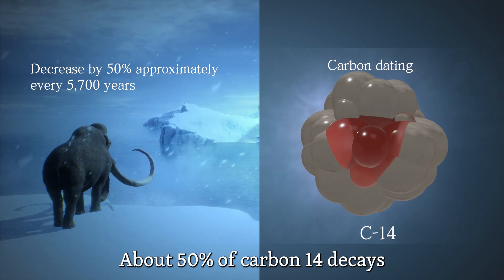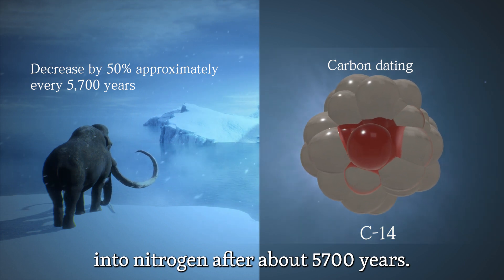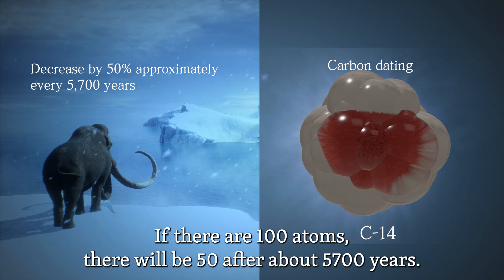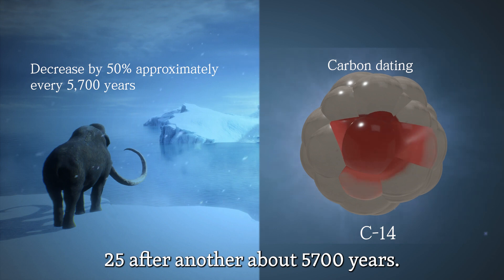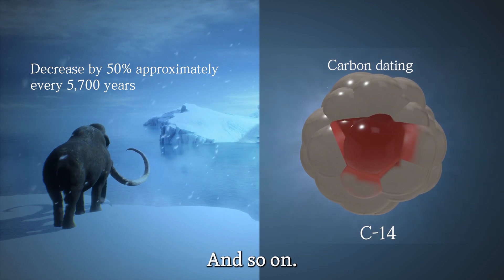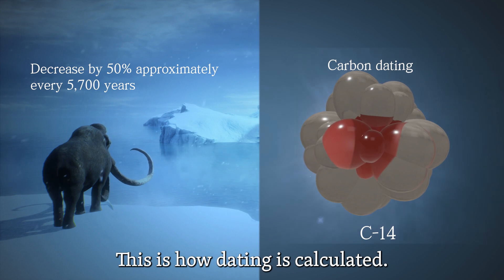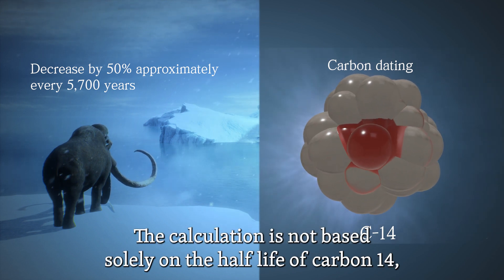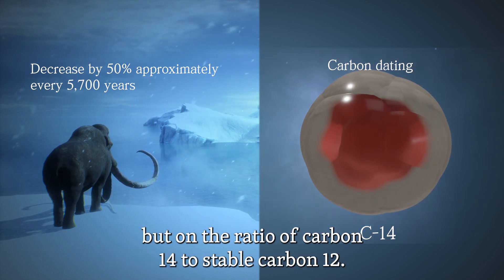About 50% of carbon-14 decays into nitrogen after 5,700 years. If there are 100 atoms, there will be 50 after 5,700 years, 25 after another 5,700 years, and so on. This is how dating is calculated. The calculation is not based solely on the half-life of carbon-14, but on the ratio of carbon-14 to stable carbon-12.